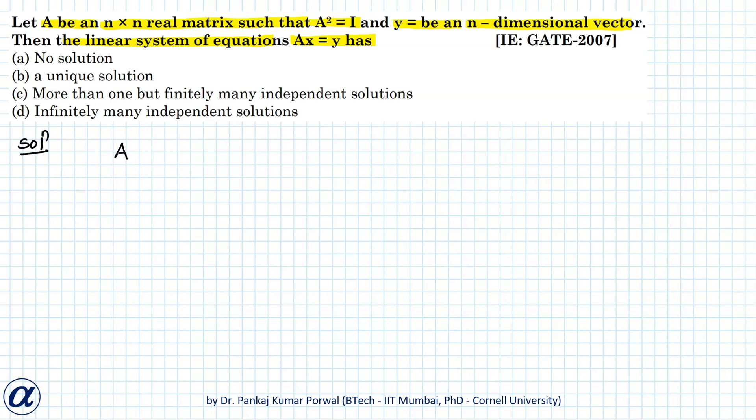Because we are given that A squared equals I, if I take determinant on both sides, I get determinant of A squared equals determinant of I.